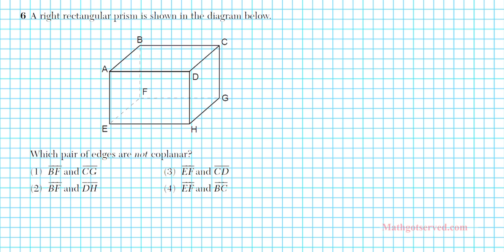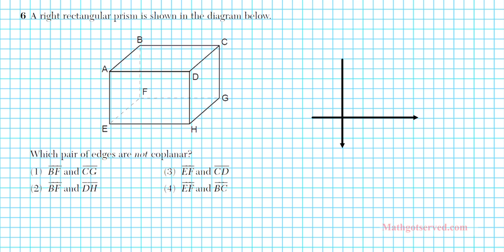Let's take a look at problem 6. The right rectangular prism is shown in the diagram below. Which pair of edges are not coplanar? We have a collection of edges and we're asked which pair are not coplanar. Let's set up a coordinate system. This is our Y axis, then we have our X axis, and let's call this our Z axis. Because we deal with a 3D object, we need to have three variables.